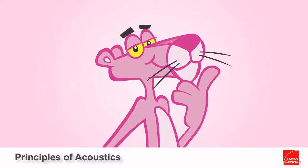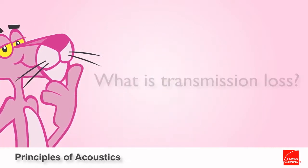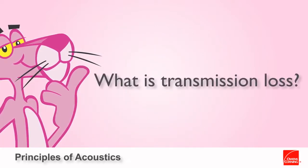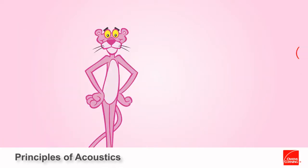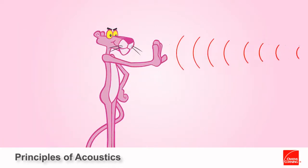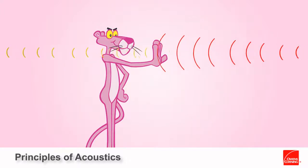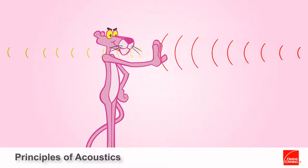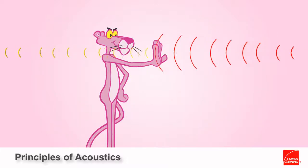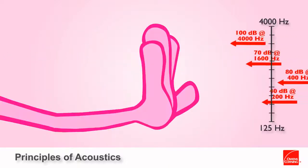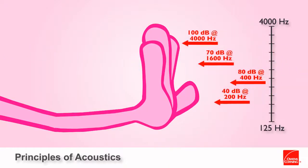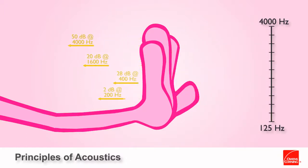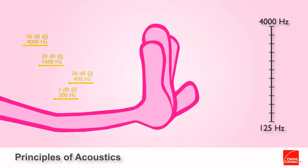Before reviewing sound transmission class ratings, referred to as STC, let's first understand transmission loss. It is the measurement of the reduction of decibels of a sound at a given frequency as it passes through a partition. Measuring transmission loss over a range of 16 different center band frequencies between 125 to 4000 Hz is the basis for determining a partition's STC rating.